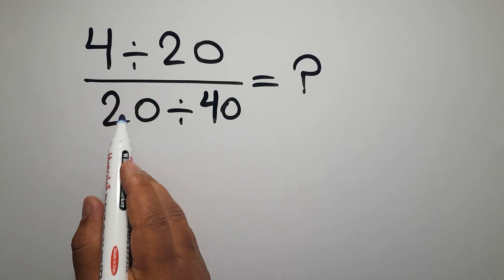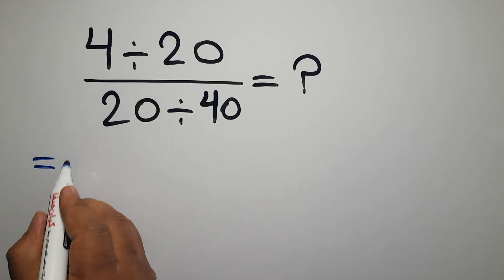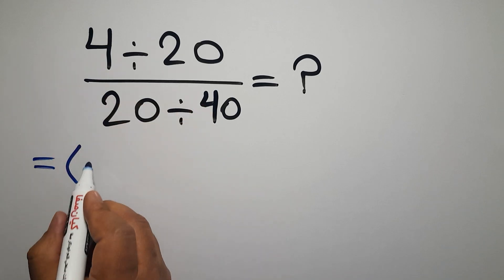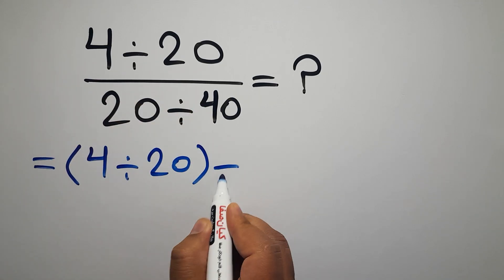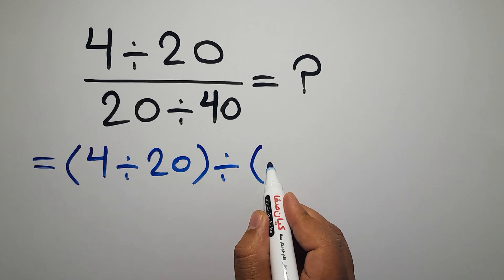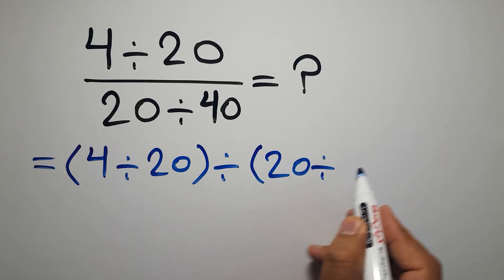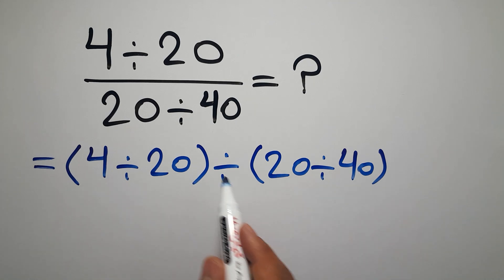First, instead of this fraction, we can write parentheses: the numerator 4 divided by 20, divided by the denominator 20 divided by 40. Now we have two parentheses and one division.